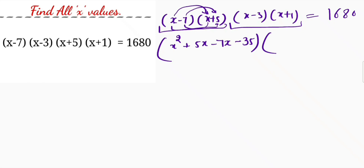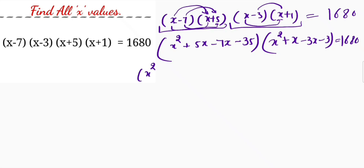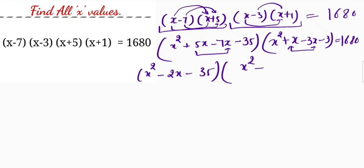Then applying the same procedure here: x squared plus x minus 3x minus 3, equals 1680. So we will get x squared minus 2x here. We subtract negative 35, and since these are like terms we can combine them. We will get negative 2x minus 3, which is equal to 1680.